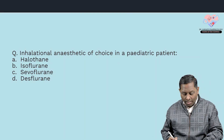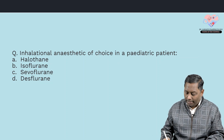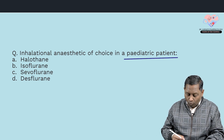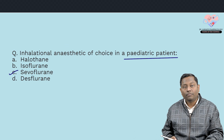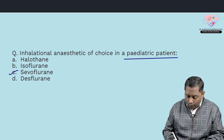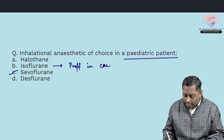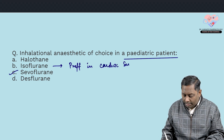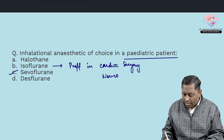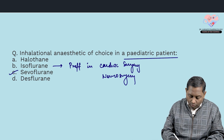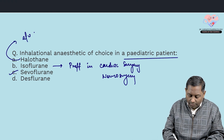First question: in inhalational anesthetics, the agent of choice for pediatric patients — because of being the least irritant and more pleasant, sevoflurane is the preferred one. Isoflurane is preferred in cardiac surgery because of its cardioprotective property, and also preferred in neurosurgery.